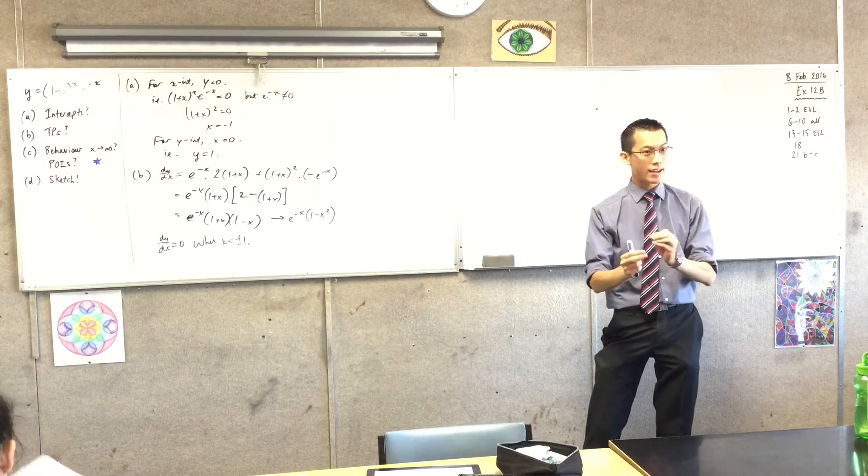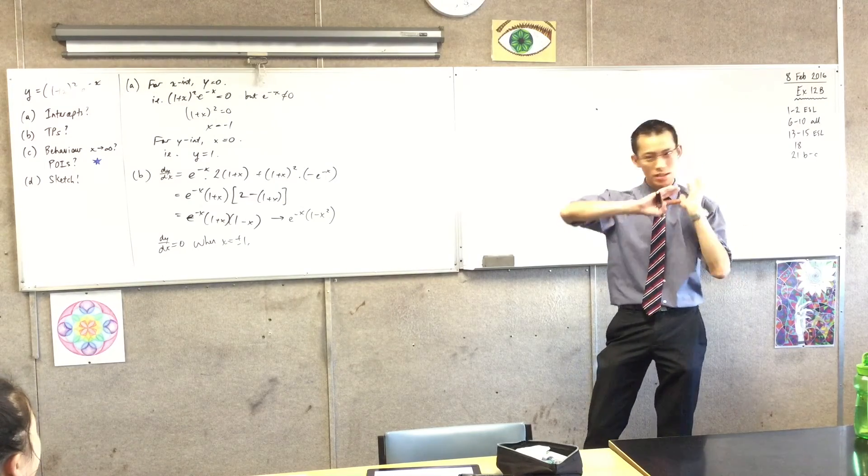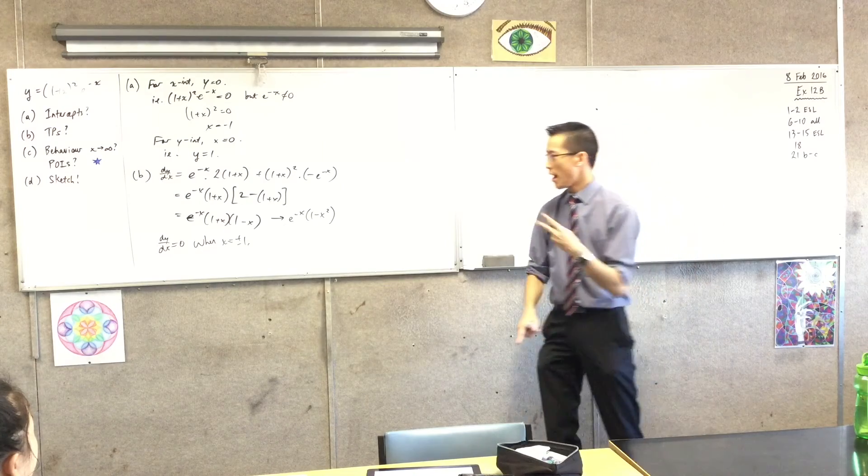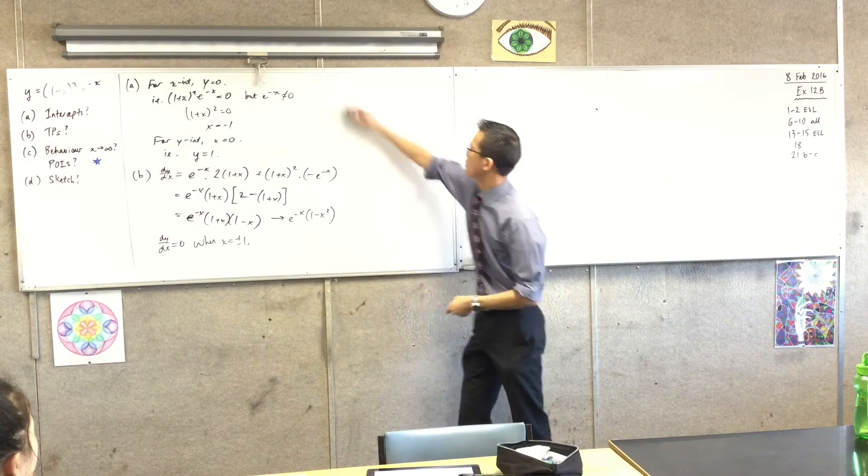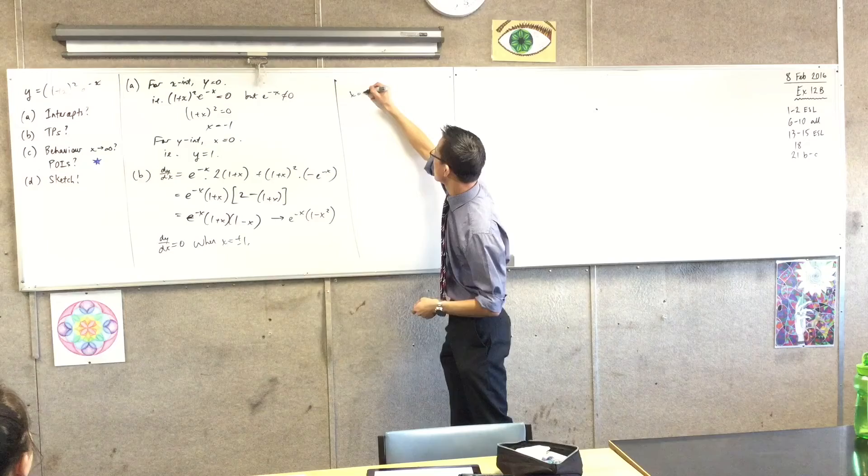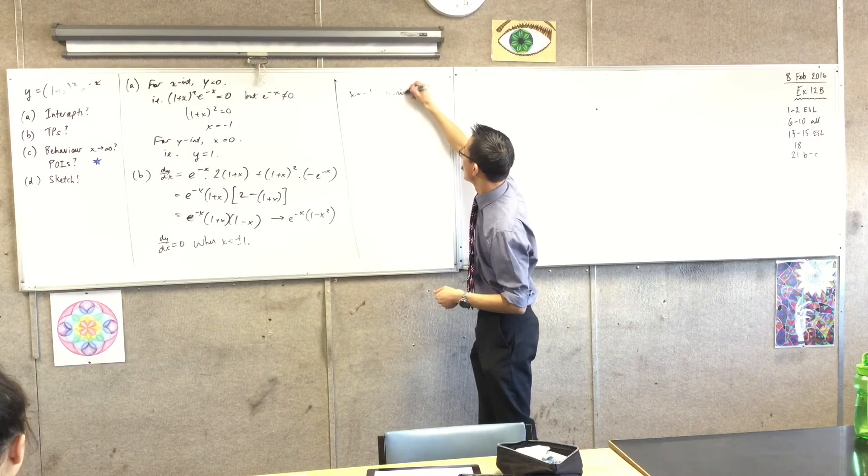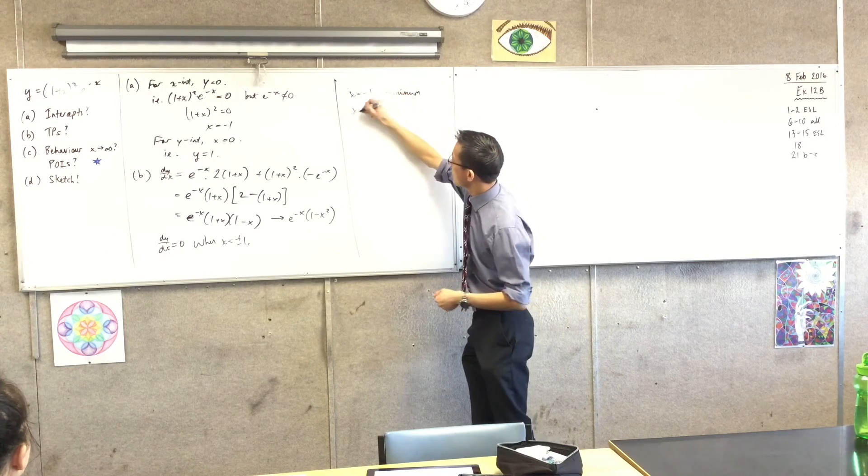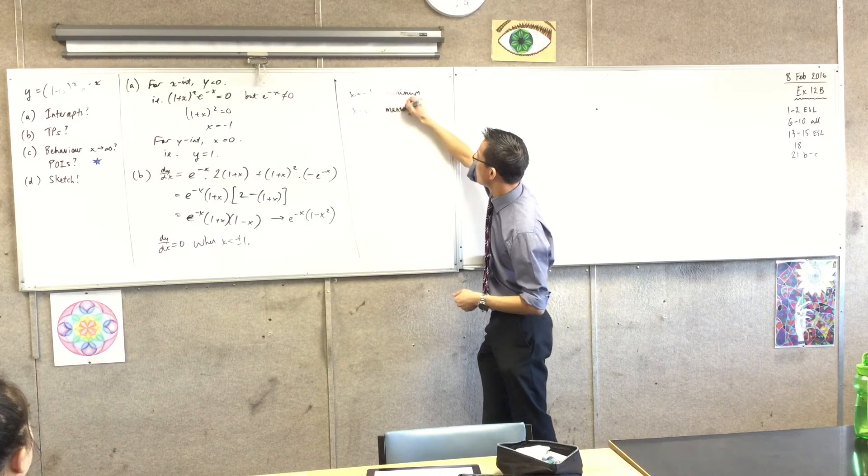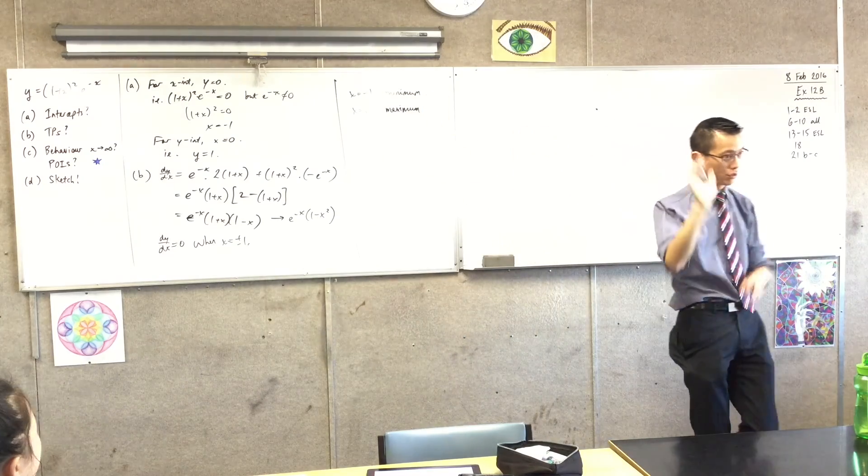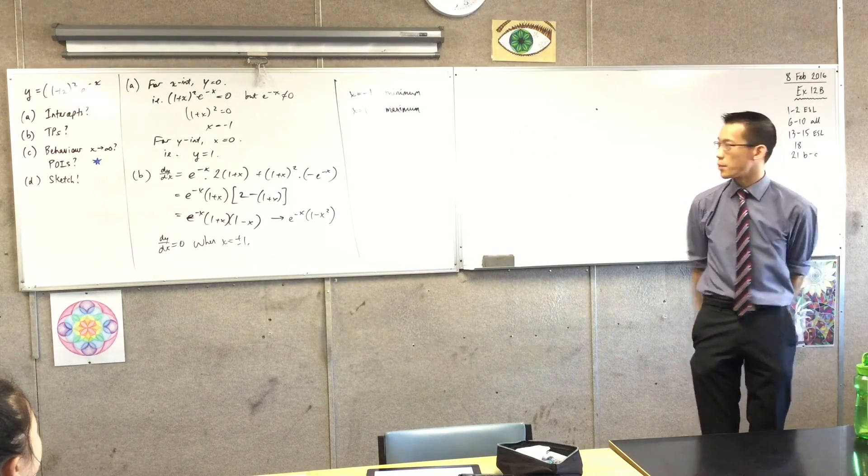Now, whichever way you go about it, and again, because it's not the focus and it's something you guys have dealt with many times, whether you go by first derivative or second derivative, I believe you'll find, let's see, x equals -1, I'm pretty sure is a minimum, which makes this guy maximum. So obviously that takes a bit of time to establish. You'll do either path and out will pop your result.